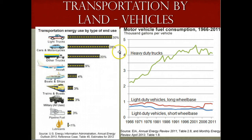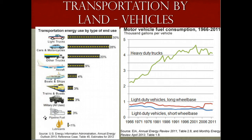Light trucks, cars, and motorcycles use about 58% of the total amount of energy consumed for transportation in the United States. Large trucks use about 20%, planes use about 9%, boats and ships about 4%, and trains and buses use about 3%. The military and pipelines each use about 3%. The national average fuel economies for passenger cars and light trucks have improved over time due mainly to federal government fuel economy standards. However, total transportation fuel consumption has generally increased due to an increase in the number of vehicles, especially light pickup trucks, sport utility vehicles, and heavy-duty freight trucks, and in the number of miles traveled per vehicle.